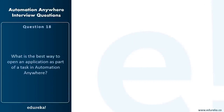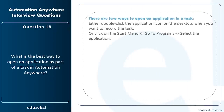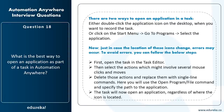What is the best way to open an application as part of a task in Automation Anywhere? There are two ways: double-clicking the application icon on the desktop while recording, or clicking Start > Programs and selecting the application. However, if icon locations change, it will result in an error. To avoid errors: open the task in the Task Editor, select the actions involving mouse clicks and moves, delete those actions, and replace them with a single-line Open File command specifying the path of the application. The task will then open the application regardless of where the icon is located.